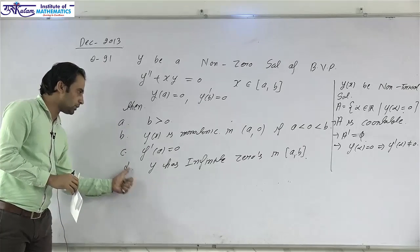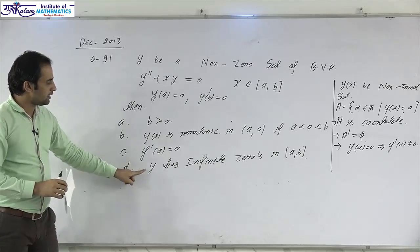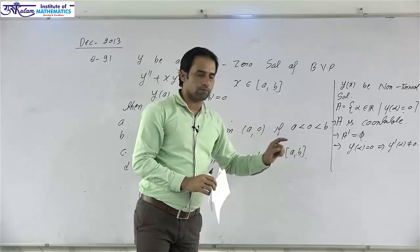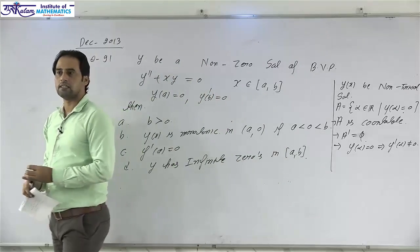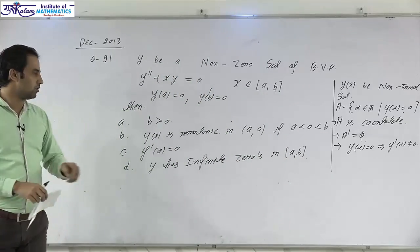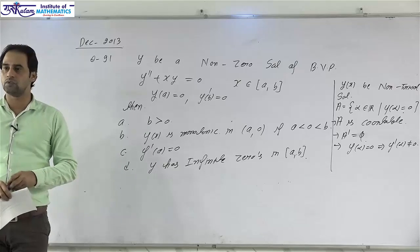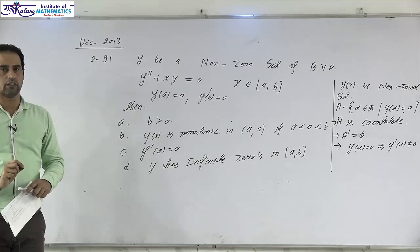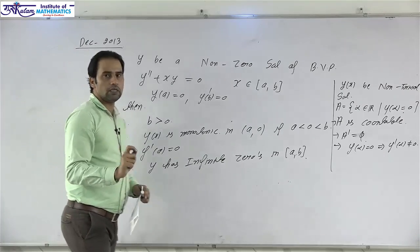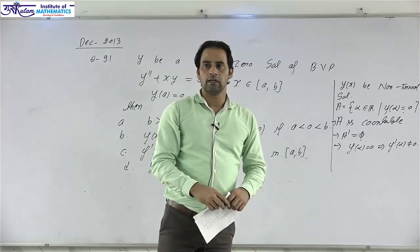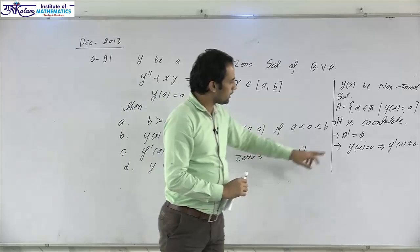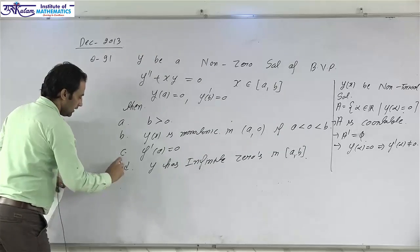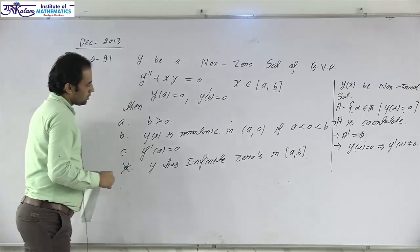Let us start with option D. Option D says y(x) has infinitely many zeros in the closed interval [a, b]. If y(x) has infinitely many zeros in [a, b], then the set of zeros is infinite and bounded. Every infinite bounded set has a limit point, but by the property above, the set of zeros has no limit point — which is a contradiction. So option D is incorrect.